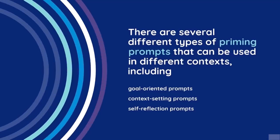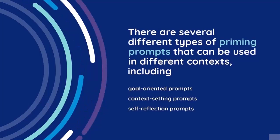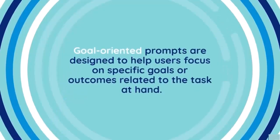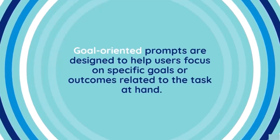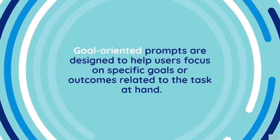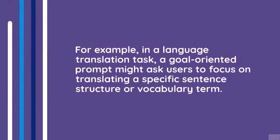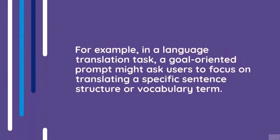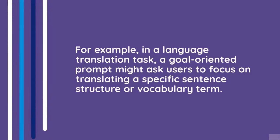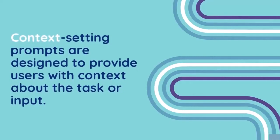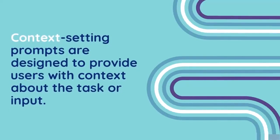There are several different types of priming prompts, including goal-oriented prompts, context-setting prompts, and self-reflection prompts. Goal-oriented prompts are designed to help users focus on specific goals or outcomes related to the task. For example, in a language translation task, a goal-oriented prompt might ask users to focus on translating a specific sentence structure or vocabulary term.